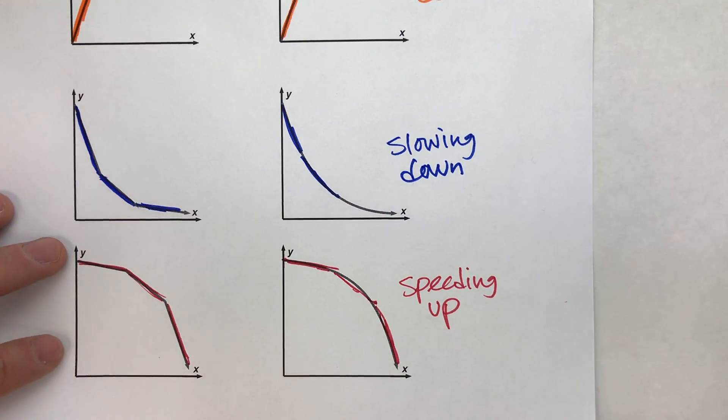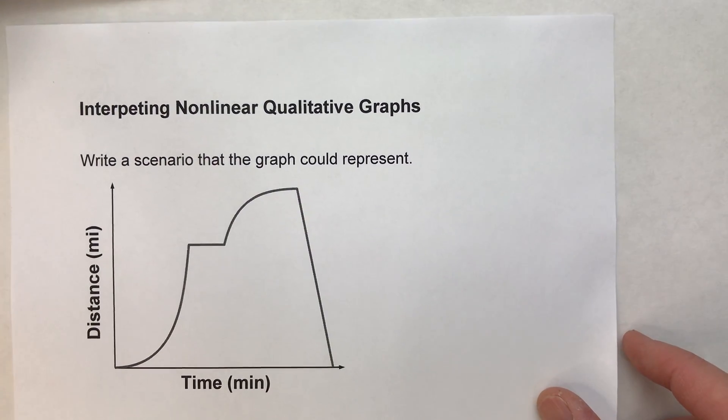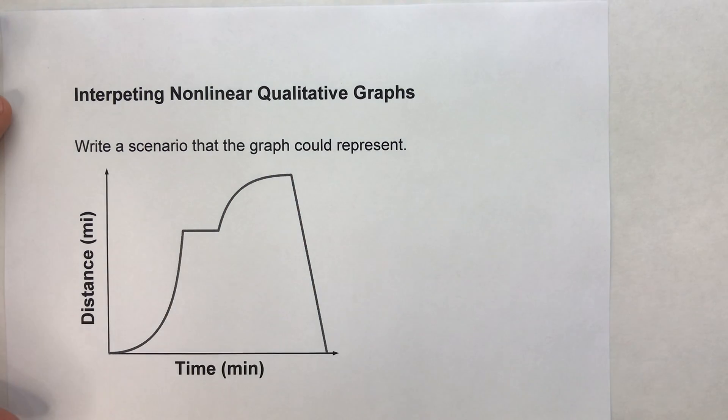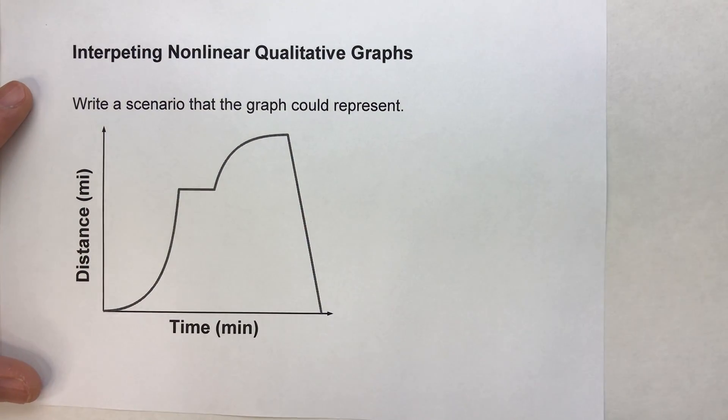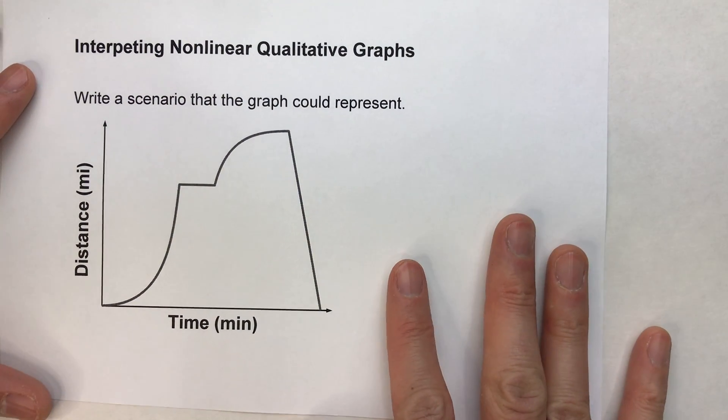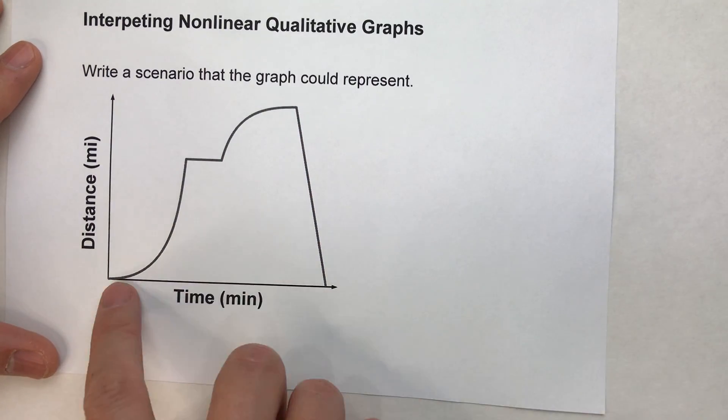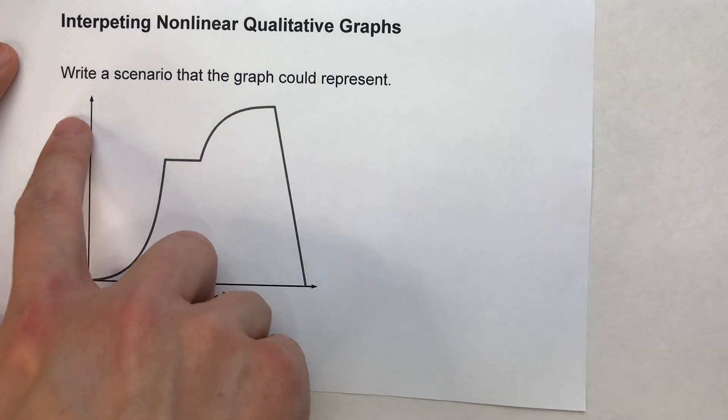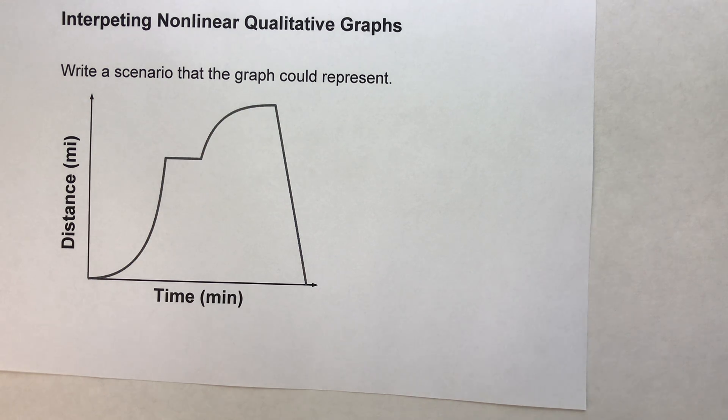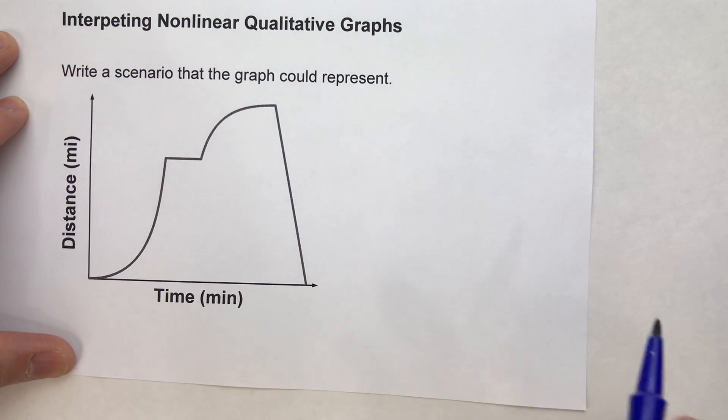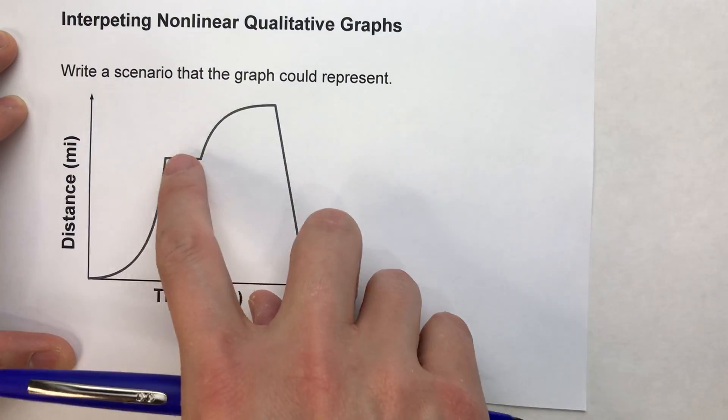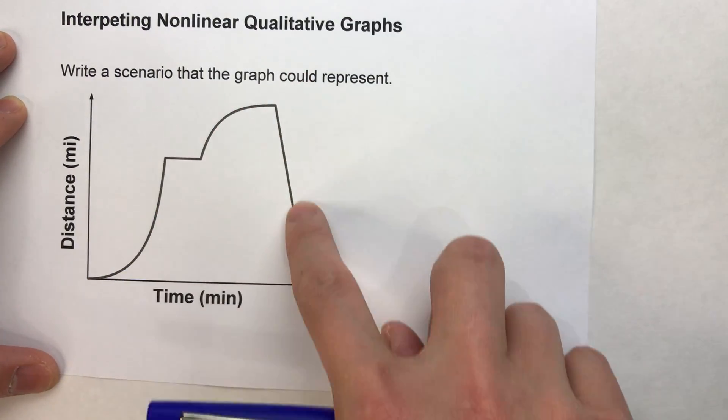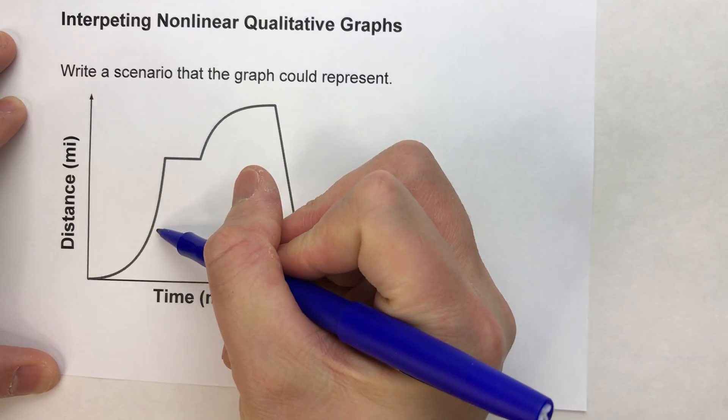So let's look at a scenario here. Interpreting nonlinear qualitative graphs. So suppose we have this scenario. Write a scenario that the graph could represent. We've got time on the x-axis. We got distance on the y-axis. And we want to write a scenario that matches this. Now we're just going to use the same ideas we were just talking about. So notice this is made up of four intervals. One, two, three, and four.